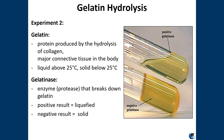Experiment two tests for gelatin hydrolysis. Gelatin is a protein derived from collagen, a component of vertebrate connective tissues. Gelatinase comprises a family of extracellular enzymes produced and secreted by some microorganisms to hydrolyze gelatin. Subsequently the cell can take up individual amino acids and use them for metabolic purposes to make energy. The presence of gelatinase can be detected using nutrient gelatin, a simple test medium composed of gelatin, peptone, and yeast extract.